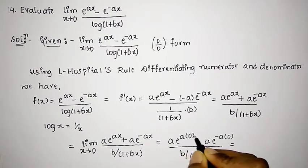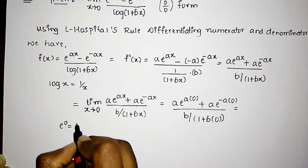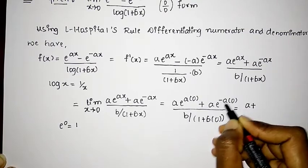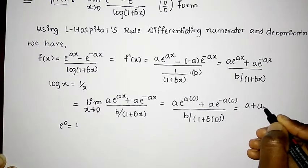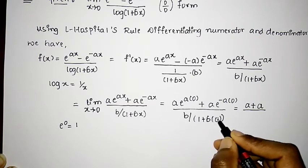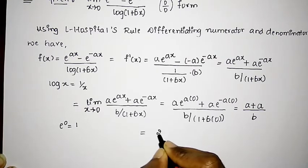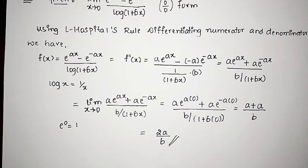Now e raised to 0 is nothing but 1, so 1 into a is a. Similarly, e raised to 0 is 1, so 1 into a is a. For the denominator, b divided by 1 plus b into 0 is b divided by 1, which gives b. So a plus a is 2a, divided by b. So 2a by b is the required result. Thank you friends — for more problems on L'Hôpital's rule, go through our channel and please subscribe.